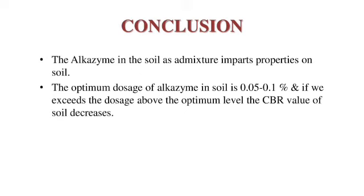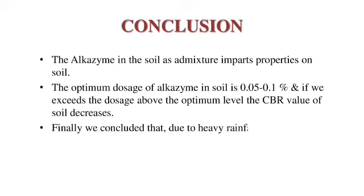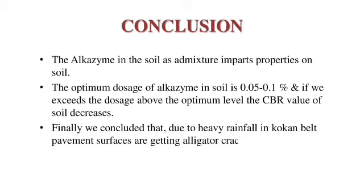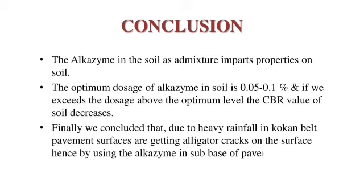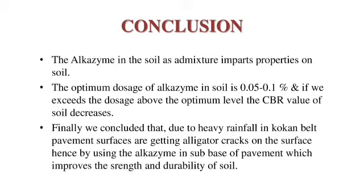The results also indicate a 60 percent and 40 percent increase in the bearing capacity value of soil in unsoaked and soaked conditions respectively, compared to soil without addition of Alkazim. Finally, we concluded that due to heavy rainfall in the Konkan region, pavement surfaces are developing cracks on the surface. Hence, by using Alkazim in the subbase of pavement, the property can be improved by up to 40 to 60 percent in CBR value.